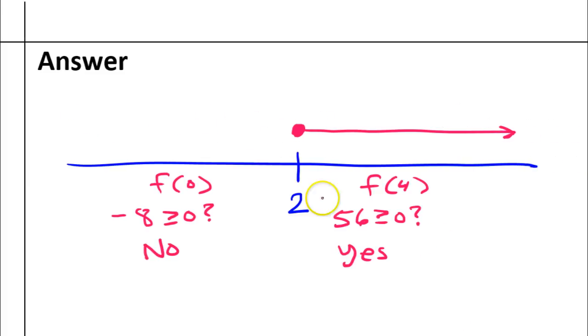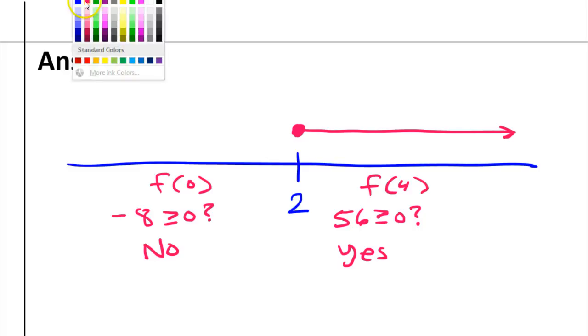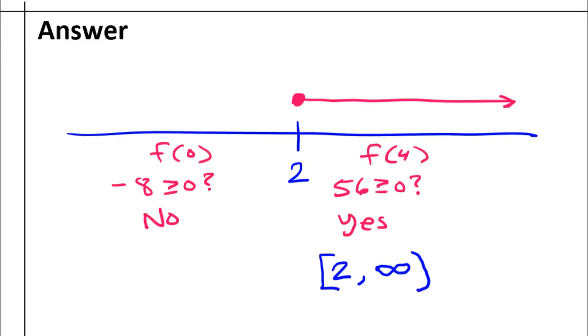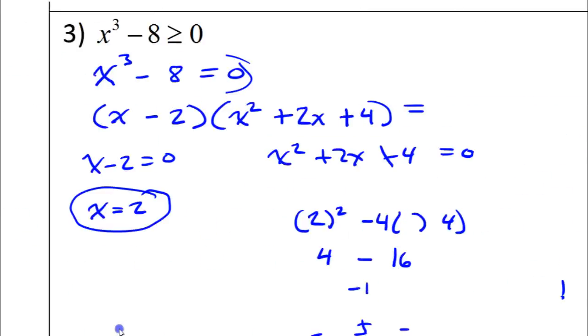So, writing this in interval notation, the solutions go from two to positive infinity. So, I will write two to positive infinity like this. And, I'll use a square bracket to include the end point of two. Same meaning as a closed circle. And, infinity always gets a round parenthesis. So, that's it for problem number three.